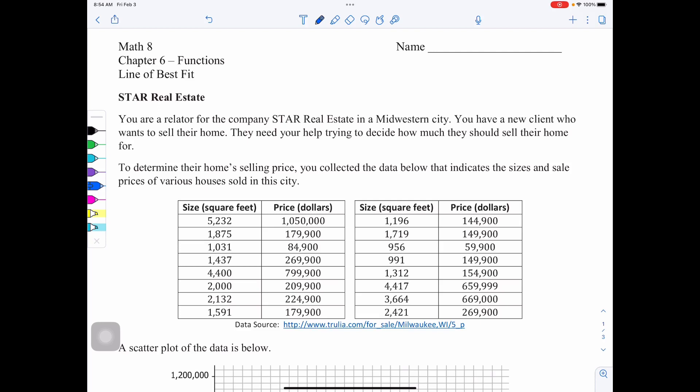Today's lesson is called Line of Best Fit. We're going to look at a situation around Star Real Estate. Let's say you are a realtor for the company Star Real Estate in a Midwestern city. You have a new client who wants to sell their home. They need your help trying to decide how much they should sell their home for. To determine their home's selling price, you collected the data below that indicates the sizes and sale prices of various houses sold in the city.